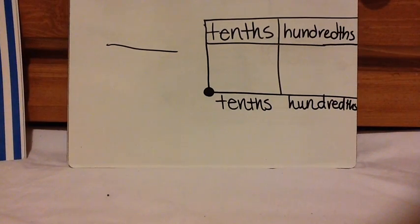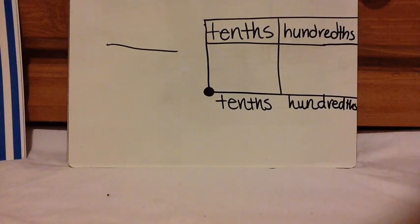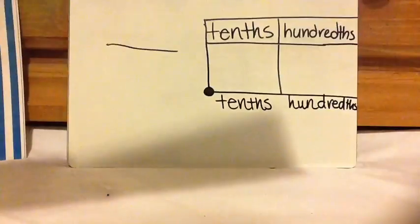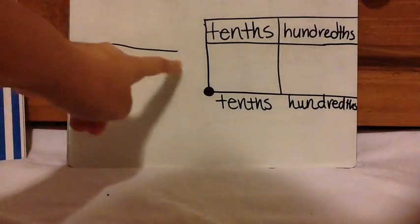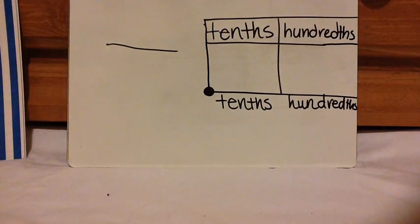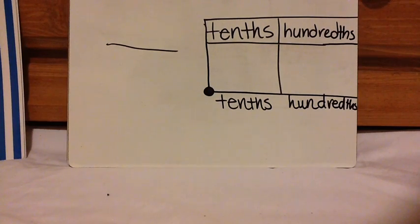I took that place value chart from my first video, the one where I flipped the numbers, and put it on a marker board because it will be easier to work with, and I drew a line for my fraction. I'm going to put a picture up and I want you to write the fraction and the decimal. Press pause and then press play when you're ready to check.